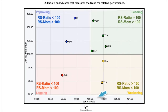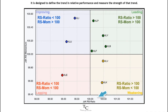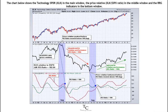RS ratio is an indicator that measures the trend for relative performance. Similar to the price relative, RS ratio uses ratio analysis to compare one security against another, usually the benchmark. It is designed to define the trend in relative performance and measure the strength of that trend. The chart below shows the Technology SPDR, XLK, in the main window, the price relative XLK/SPX ratio in the middle window, and the RRG indicators in the bottom window.